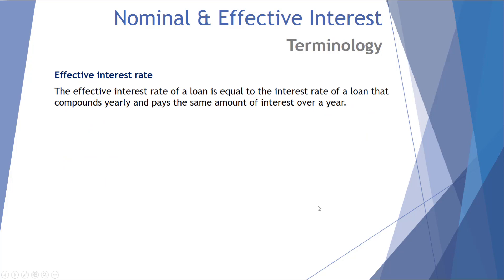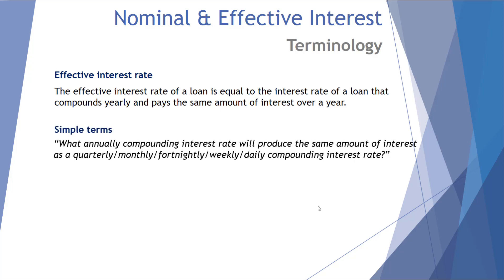Let's consider the term effective interest rate. The effective interest rate of a loan is equal to the interest rate of a loan that compounds yearly and pays the same amount of interest over a year. My take on this: what annual compounding interest rate will produce the same amount of interest as a quarterly, monthly, fortnightly, weekly, or daily compounded interest rate?